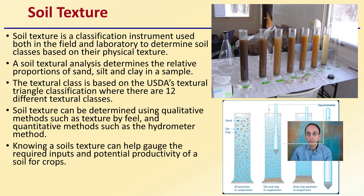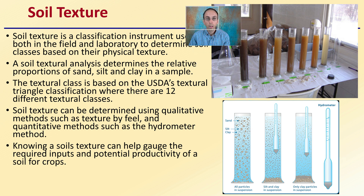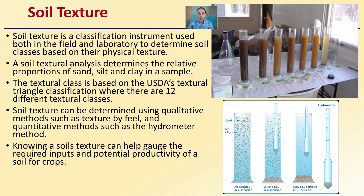Soil texture is a classification instrument used both in field and laboratories to determine soil classes based on their physical structure. A soil texture analysis determines the relative proportions of sand, silt, and clay in a sample. The textural class is based on the USDA's textural triangle classification, where there are 12 different textural classes. Soil texture can be determined using qualitative methods such as texture by feel, and also quantitative methods which include the use of a hydrometer method.